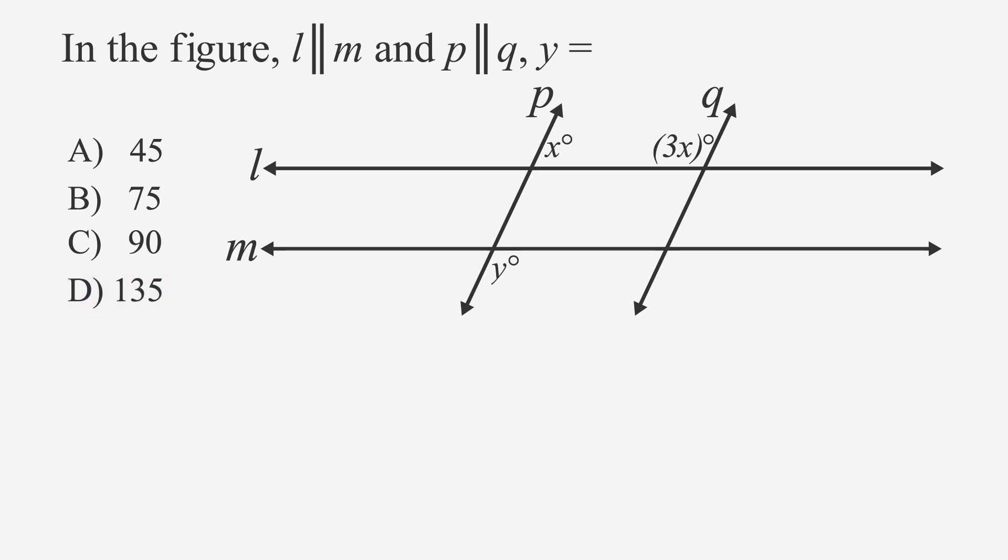All we need to do is apply the rules we just practiced. Since we know that lines P and Q are parallel, line L is the transversal of those two lines. And since lines L and M are parallel, line P is the transversal of those lines.